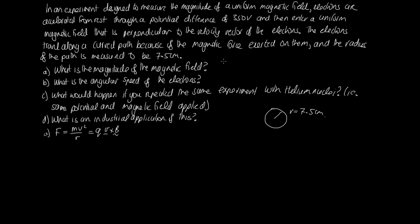Since velocity and magnetic field are perpendicular, qv × B simplifies to qvB. So mv²/r = qvB, and canceling one velocity gives B = mv/(rq). We don't yet know the speed, so we use the accelerating potential. The electrical potential equals potential energy per unit charge, so the change in potential energy equals the potential times the charge, which — since it starts from rest — equals the final kinetic energy.